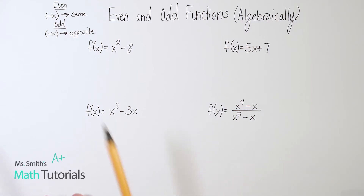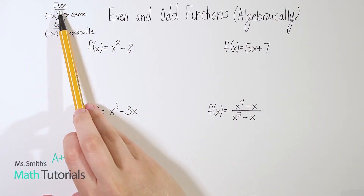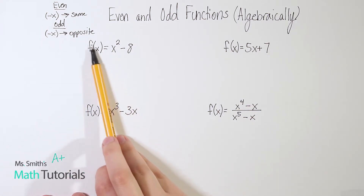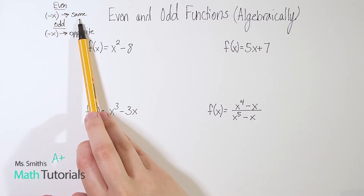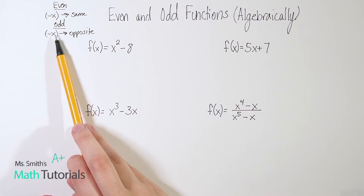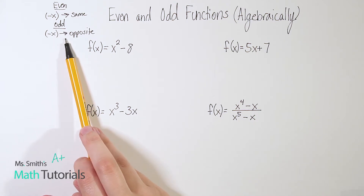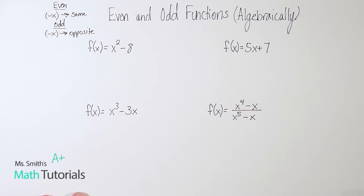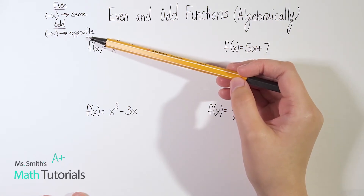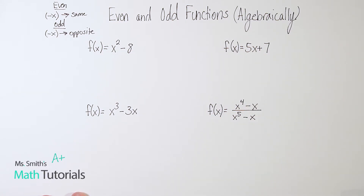So the way this works is: if it is an even function, if you plug in negative x for x — so whenever you see an x, you're going to put in negative x — you should end up with, once you simplify, the exact same thing you started with. Same signs, everything. If it is odd, when you plug in negative x and you simplify, you should get the exact opposite of what you started with, meaning your signs are flipped. And if you don't get the same and you also don't get opposite, that means it's neither.